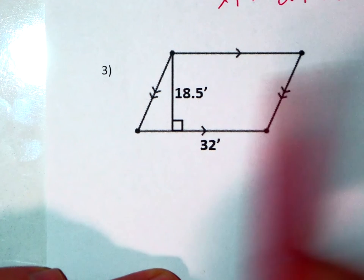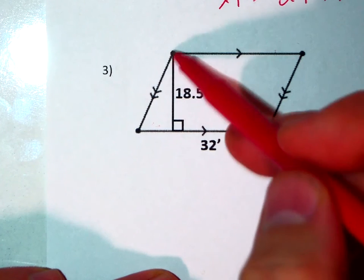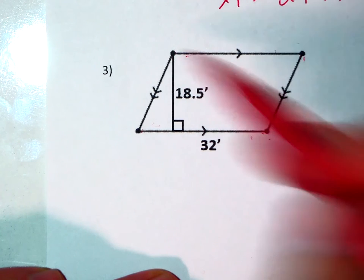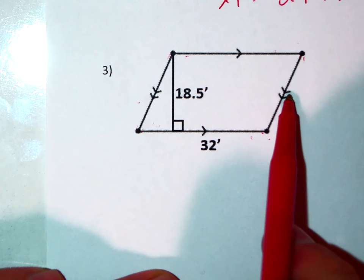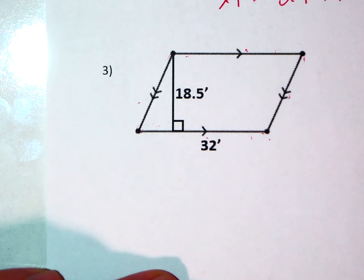A parallelogram is distinctive in that it has parallel lines on both of its opposites. So my left and right line are parallel to each other. My top and bottom line are parallel to each other.